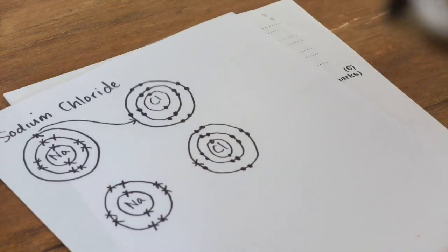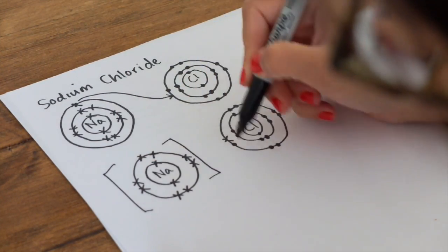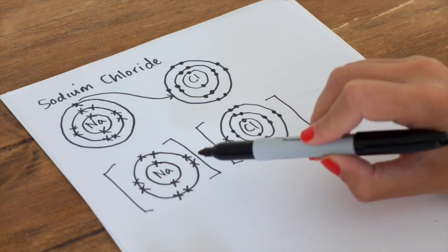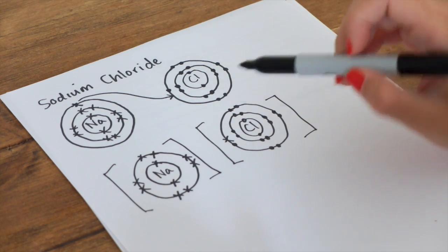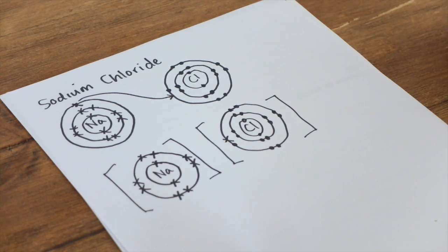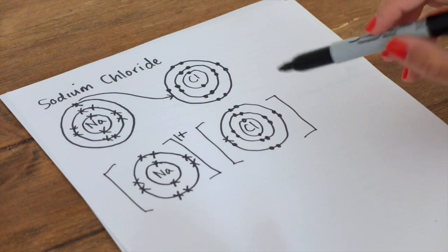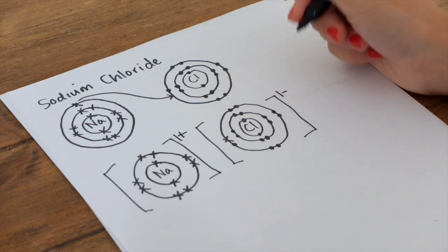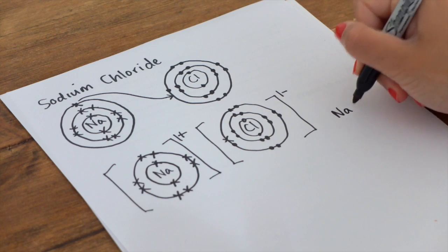Now at this point, you have to add brackets, so big square brackets around each, and we have to add a charge. Now because sodium has lost an electron, remember an electron has a negative charge. So in comparison, the sodium ion will now be positive, so that's going to be positive one. And also chlorine has gained an electron, so it's gained a negative charge, so it'll be one negative. And there's your answer, so your formula for sodium chloride is NaCl.